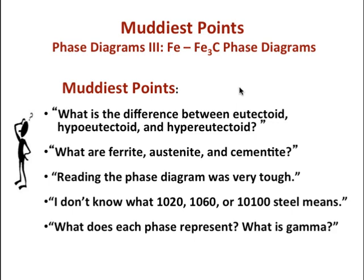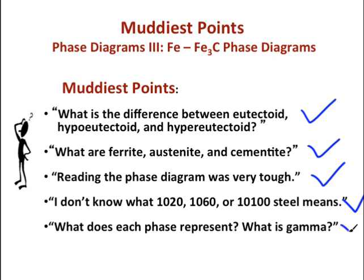This screencast has answered all of the muddiest points. We now know the difference between eutectoid, hypo-eutectoid, and hyper-eutectoid; what ferrite, austenite, and cementite are; how to read the phase diagram and its reactions; and the steel classification system with applications. In Phase Diagrams Part 4, we will use what we learned to perform phase calculations and examine associated microstructures, explaining how weight percent carbon affects properties.